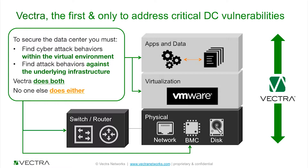Vectra's approach is that we need to understand both the virtualized layers natively as well as what's going on in the underlying infrastructure — and we do both in ways that no one else in the industry really does. We are able to look at all the traffic going back and forth within the virtualized data center between workloads, look for signs of an advanced attack, signs of an attacker that may already have access or may be stealing data. We integrate with VMware's vCenter to always retain the right context of what's going on in that virtualized environment, so if a new workload or application is spun up, we'll see and understand it.